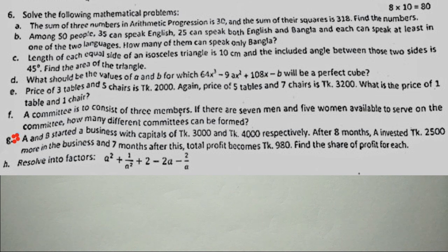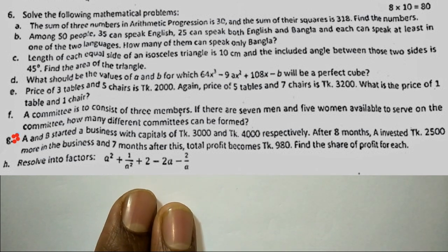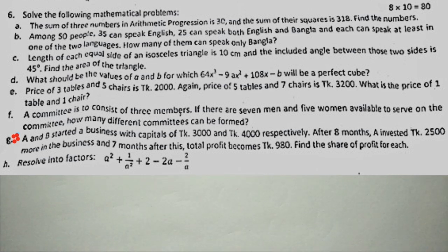A and B started a business with capital of Taka 3000 and Taka 4000 respectively. After some months, A invested Taka 2500 more in the business. After seven months, the total profit became Taka 980. Find the share of profit. Let A's capital be 3000 and B's capital be 4000.